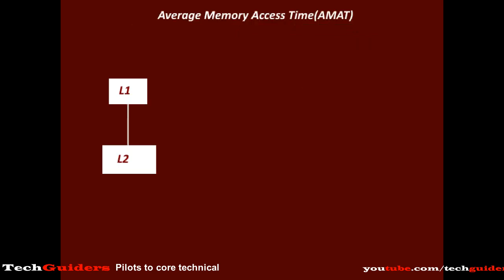Now moving to average memory access time. Consider a small hierarchy with just two levels, L1 and L2. It can be two levels of cache or it can be cache and main memory. Let the access time of L1 be T1 = 5 nanoseconds and access time of L2 be T2 = 20 nanoseconds. And for L1 the hit ratio is H1. Since L2 is the last level, we assume that every requested word can be found at this level, thus the hit ratio here is equal to 1.